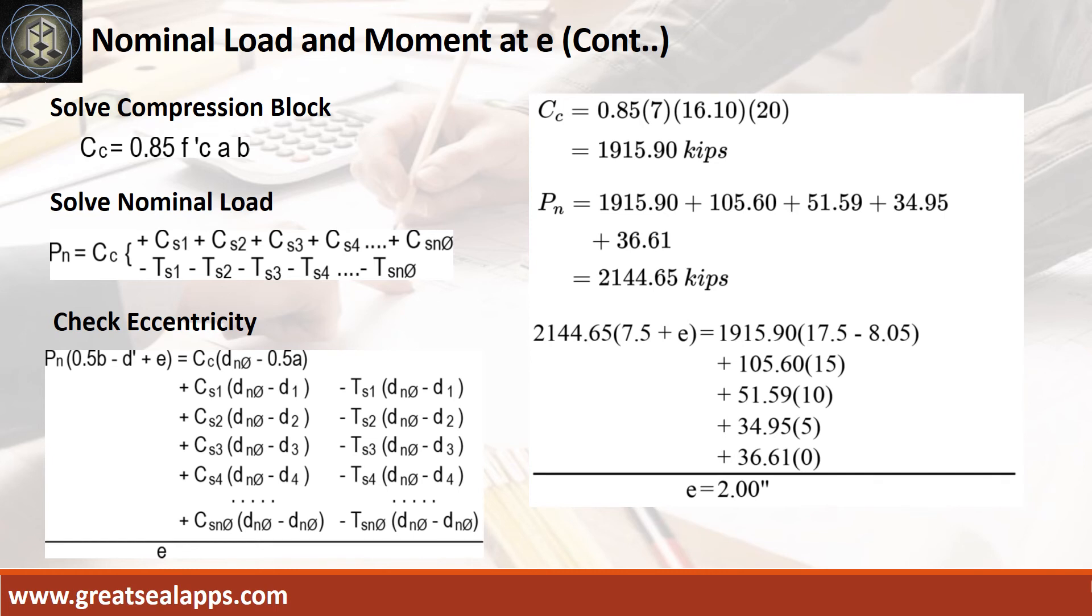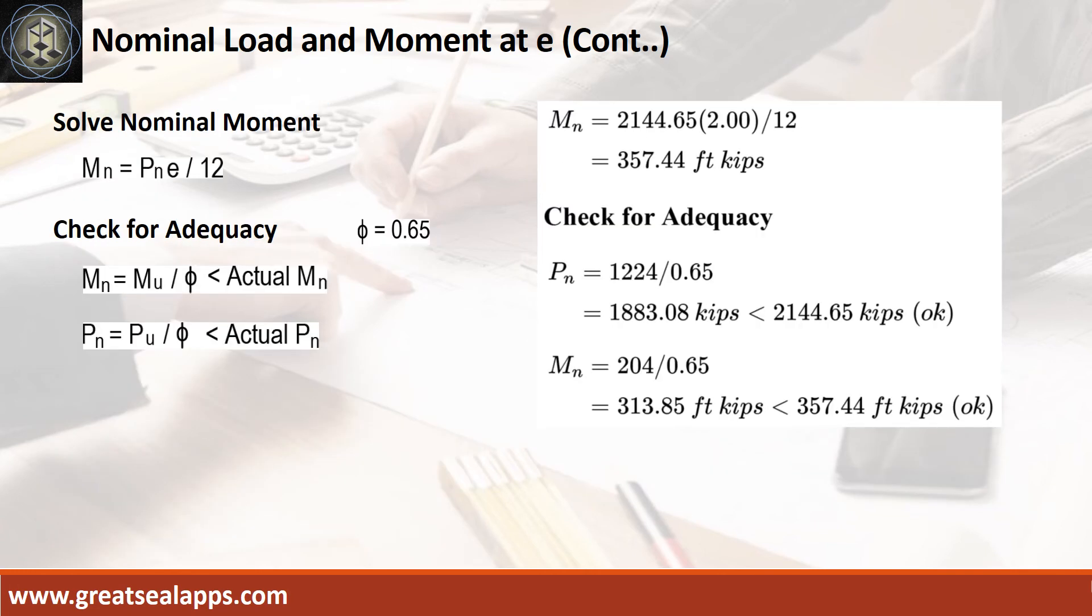Follow the computations below for final check of eccentricity at 2 inches. Given nominal axial load equals 2,144.65 kips and E equals 2 inches, the nominal moment is 357.44 kips.